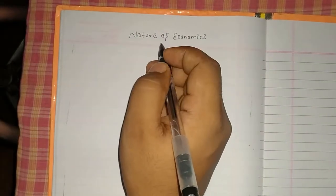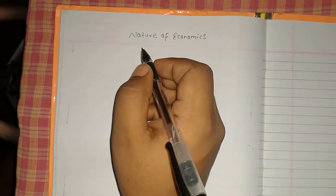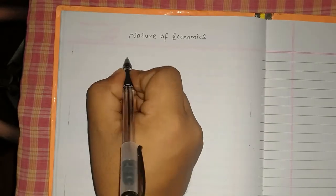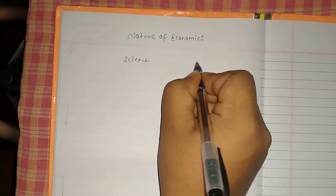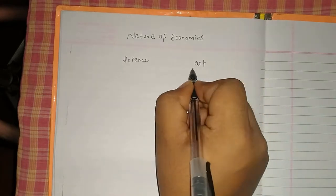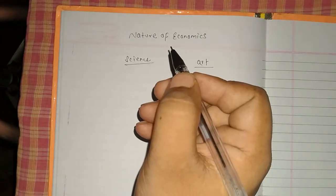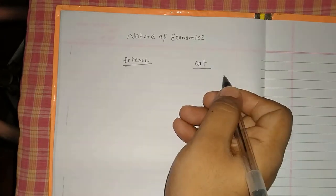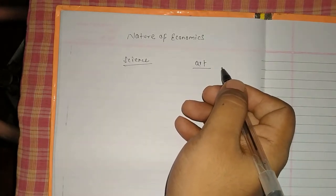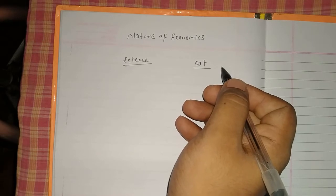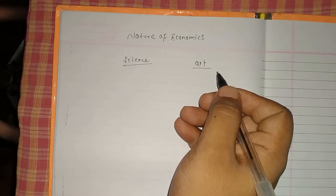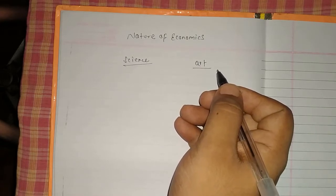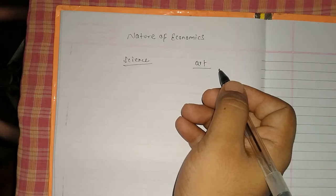Today's topic is the nature of economics — meaning whether economics is a science or an art. There is no consensus among economists regarding the nature of economics. Many economists consider economics as a science, whereas many others regard it as an art.